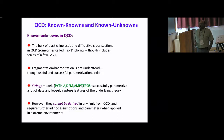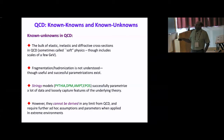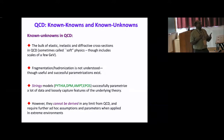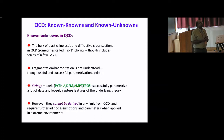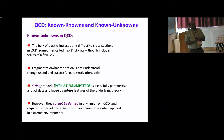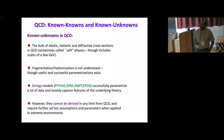There are lots of models — stringy models — that go by names like PYTHIA, the dual parton model, AMPT, EPOS, and so on, which successfully parameterize a lot of data. Much of the soft physics produced at the LHC is fairly well parameterized by these, capturing key features of the underlying theory at some level. But they're hard to motivate from first principles and must constantly be retuned when new data appears.